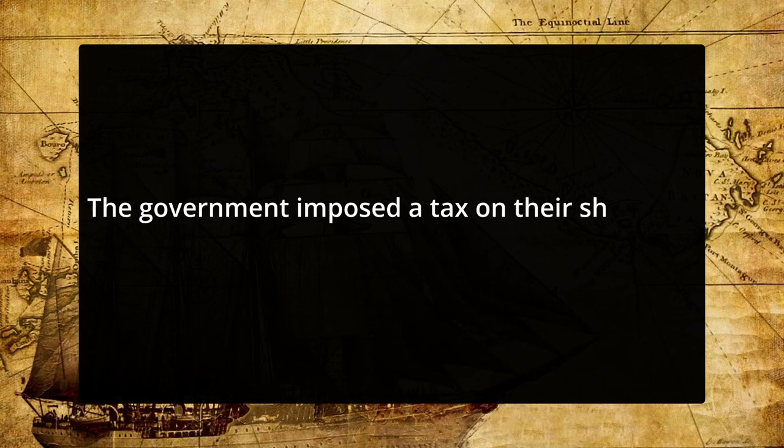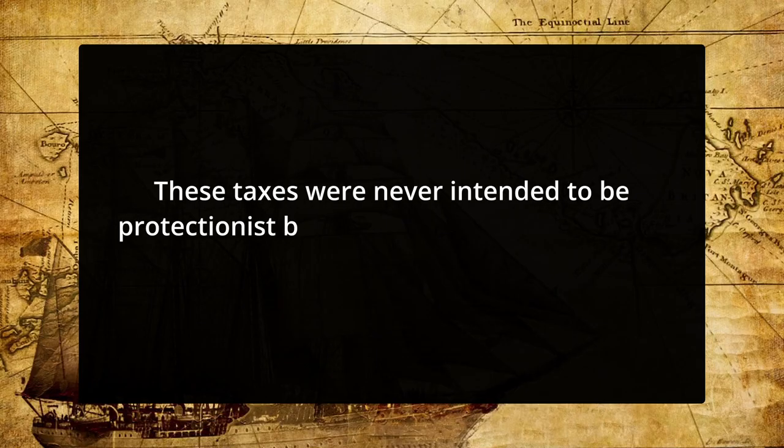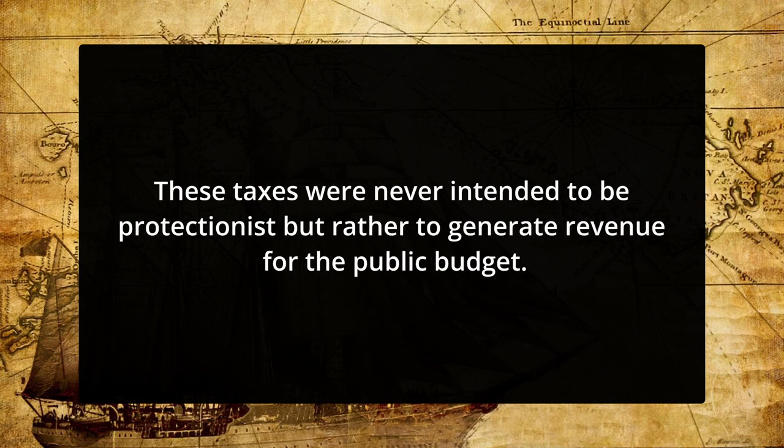Coming to some trade regulations: the traders known as Emporoi were the primary participants in Greek trade. The government imposed a tax on their shipments. At Piraeus, an important port of Athens, this tax was initially placed at 1% or more. The tax was increased to 33 talents by the end of the 5th century. In 413, Athens stopped collecting tribute from the Delian League and levied a 5% tax on all of her empire's ports in an effort to increase revenue. These taxes were never intended to be protectionist but rather to generate revenue for the public budget.